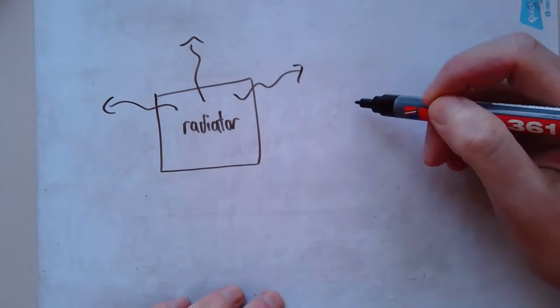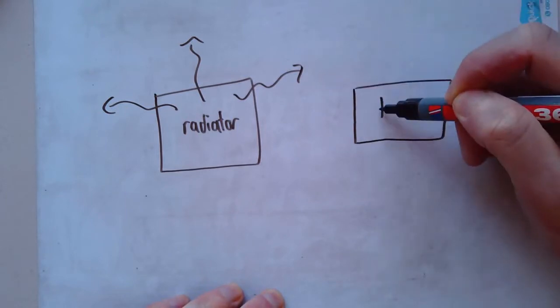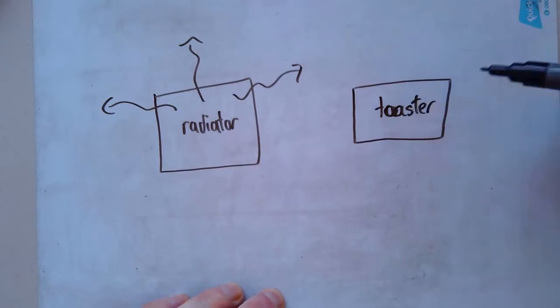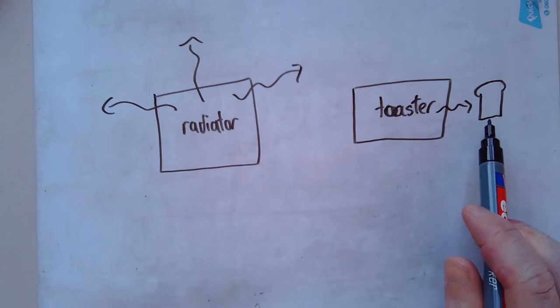On the other hand, in my kitchen, I've got a toaster. Now, my toaster also transfers energy to the surroundings. In this case, to the bread, the slice of bread that I put in my toaster. But it does it a lot quicker. And because it does it a lot quicker, my bread can turn to toast. And if I do it too quickly, my bread will even burn.